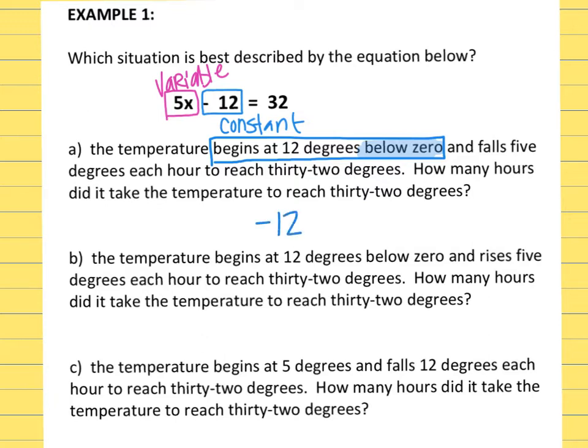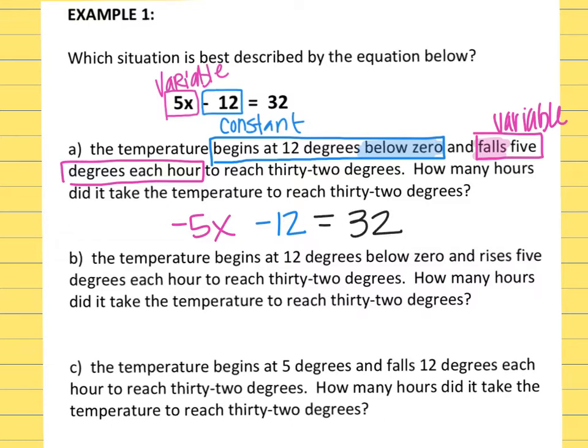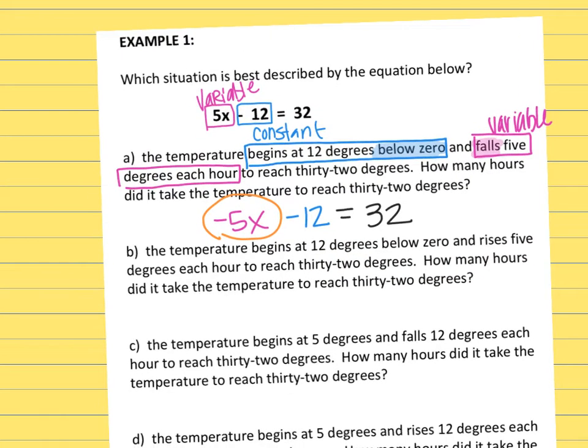So I know I have negative 12. And then the question says it falls 5 degrees each hour, so that's going to be our variable. So I have negative 5X, and then the total was 32. This question right now is not matching because it said negative 5X, so that would make this one wrong.